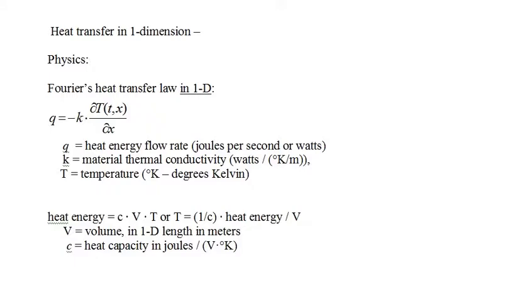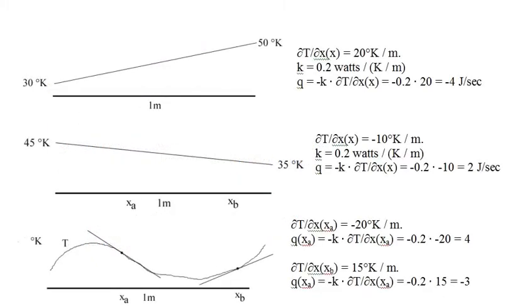We'll usually write it as temperature equals one over c times heat energy divided by volume. The graphs illustrate the heat transfer law in one dimension. The first graph shows a linearly increasing heat profile in a one-meter, one-dimensional object like a thin wire. The slope of the temperature profile is constant and calculated as 50 degrees minus 30 degrees over one meter, or 20 degrees K per meter. So the heat flow rate is constant at every point in the wire.